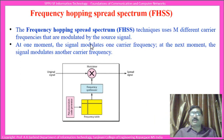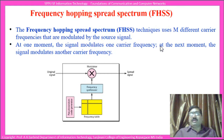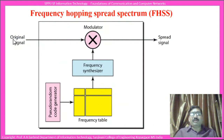The first technique is frequency hopping spread spectrum. It may have M different carrier frequencies that are modulated by the source signal. At one moment the signal modulates one carrier frequency, and at the next moment it modulates another carrier frequency. So the signal does not use the same carrier frequency for modulation. We can see that the signal goes into a modulator where the process of modulation is done.